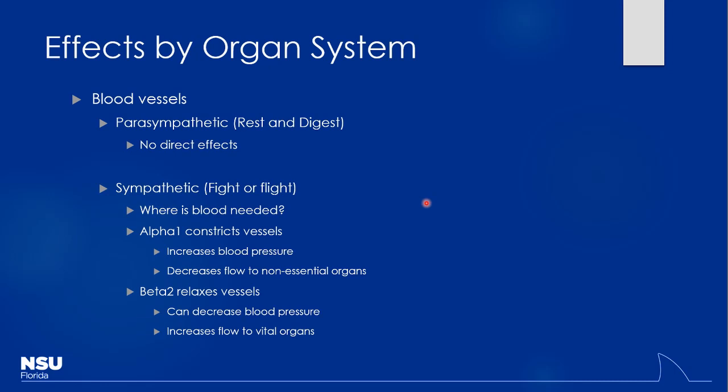If I blocked alpha-1 receptors, you'd see dilation, leading to hypotension. When you have hypotension, the heart rate will go up to compensate. If a patient with an alpha blocker on board stands up from sitting, they get really dizzy — they have orthostatic hypotension. So you're going to start to see some side effects line up with how the drugs are working. If I know a drug is lowering blood pressure, I'll expect to see dizziness, orthostatic hypotension, and falls, especially in elderly patients whose hemodynamic reserve is already declining.